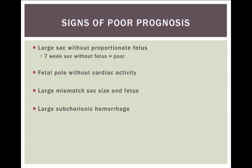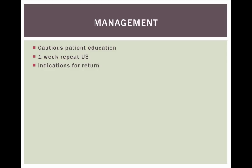These are all things we need to look for and recognize so we can counsel our patients appropriately. The management is to cautiously educate patients. Depending on what you find - if it's definitive or not quite definitive - caution them in that direction. They should usually get a repeat ultrasound in about a week and they need to know the indications for return: heavier bleeding, syncope, increased pain, or fever. Because some of these patients, if they don't pass all the tissue, can be at risk for retained products and infection, endometritis, and those kinds of things.